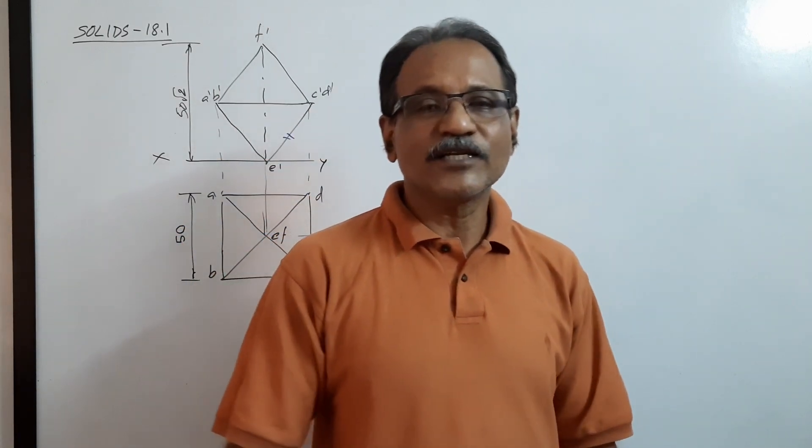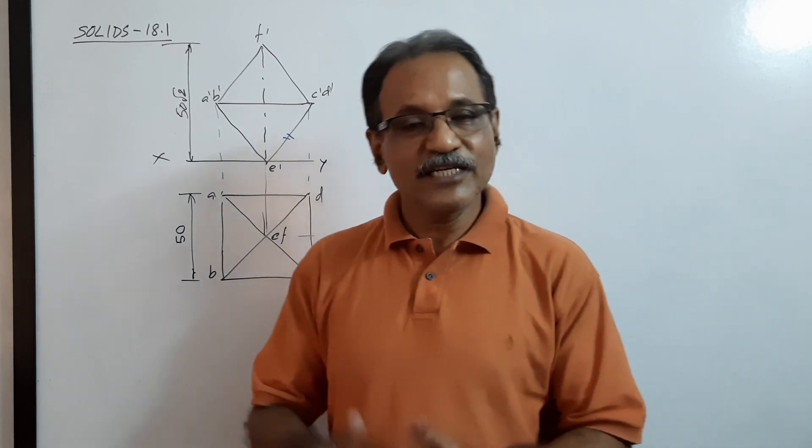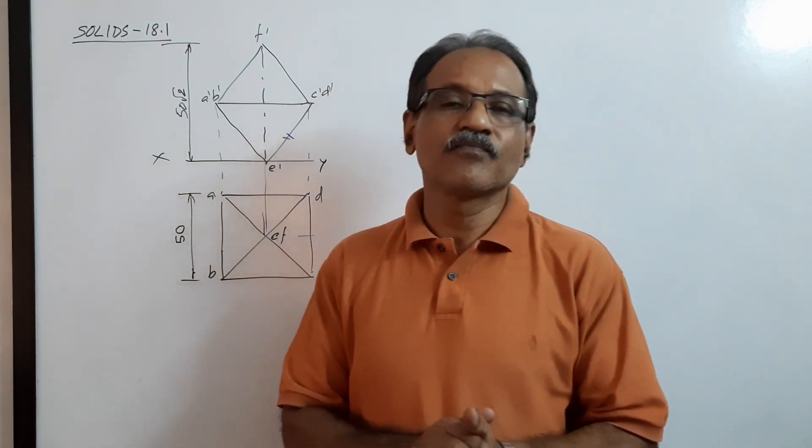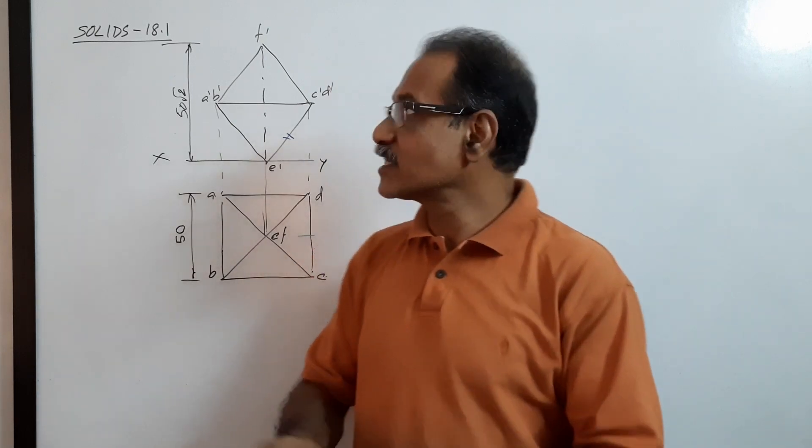Hi students, this is an octahedron 50mm side resting on HP on a triangular face with one side of the triangular face making 35 degrees to VP. We have discussed this problem in video 18 by redrawing method.